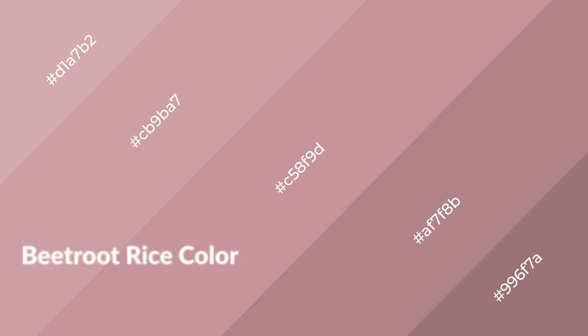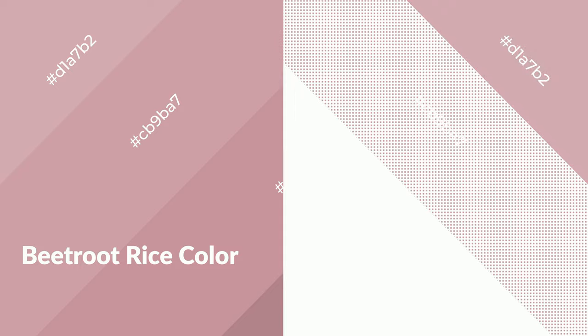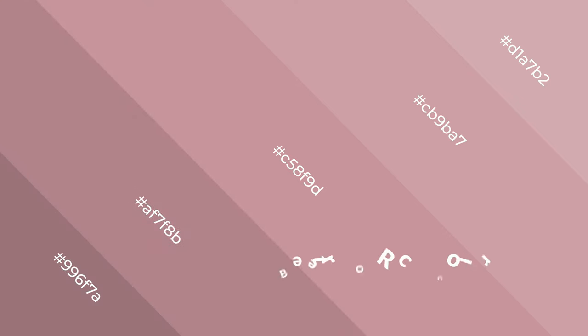Beetroot rice is a warm color and it emits cozier and active emotions. Warm colors are symbols of warmth, fire, heat, and sunshine. It also evokes joy, passion, love, and even anger. You can see them used in restaurants and gyms.